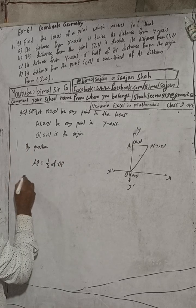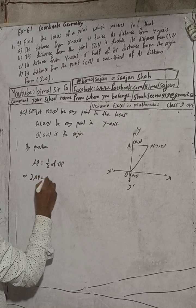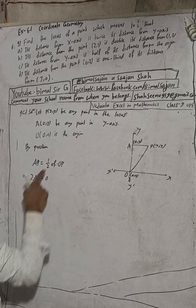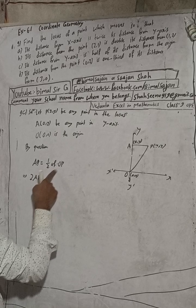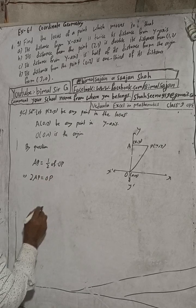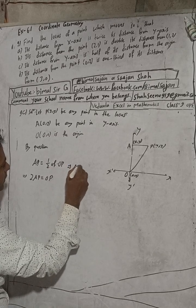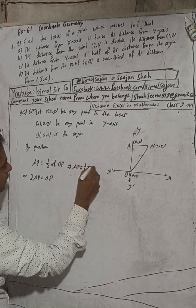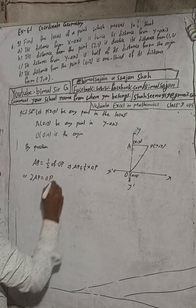Cross-multiplying: 2·AP = OP. Squaring both sides: 4·AP² = OP². Now applying the distance formula, AP² = (x − 0)² + (y − y)² and OP² = (x − 0)² + (y − 0)².